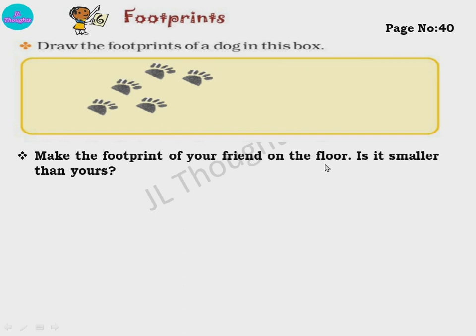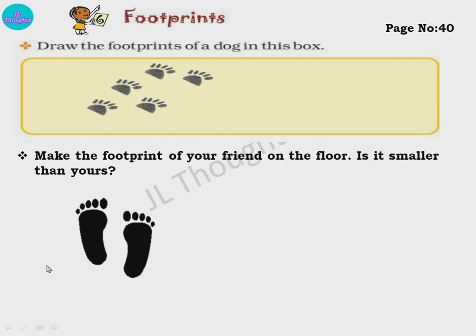Next activity: make the footprint of your friend on the floor. Is it smaller than yours? First, take the footprint of your friend on the floor, then keep your own footprint, and see whether your friend's footprint is bigger or yours is. If your friend is not there, you can do it with your brother, mother, or anyone. Take their footprint, then take your footprint, and see which is bigger and which is smaller. Obviously your mother's will be big and yours will be small, because your legs are small and your parents' legs are big.